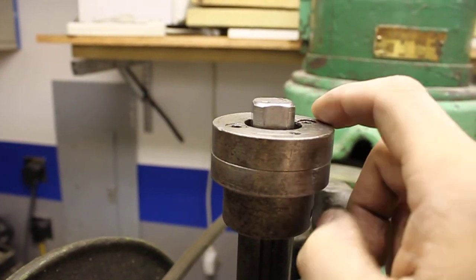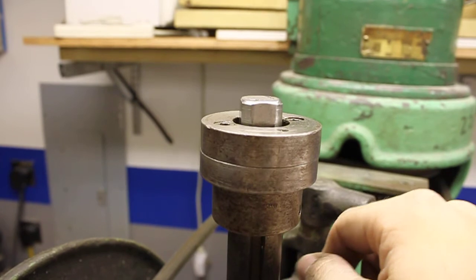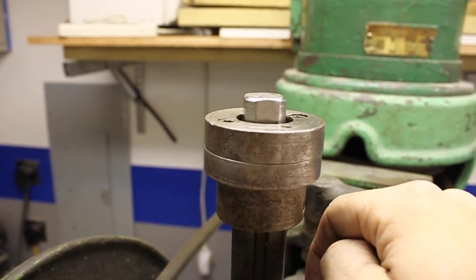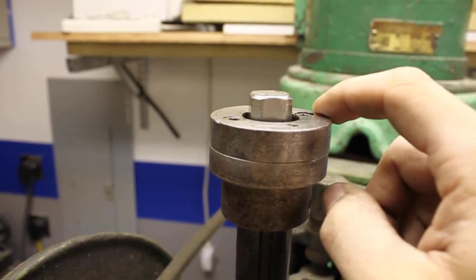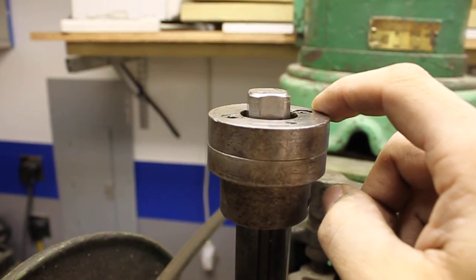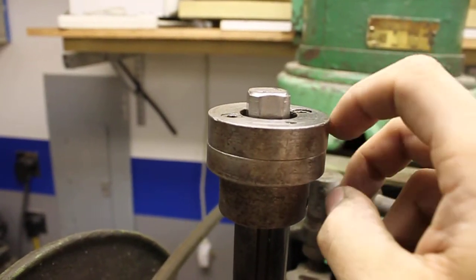Which is nice because you don't have to beat on it with a hammer, which is very bad for the spindle bearings in this machine. Yeah, if you have to ever beat on the drawbar, just stop and think.